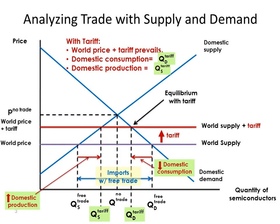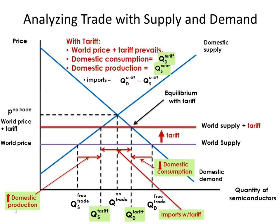What about imports? Imports are the difference between quantity demanded and quantity supplied. QD with the tariff is here and QS with the tariff is here, so imports are the difference — this distance right here. Notice that imports have fallen. Finally, a tariff is a tax on imports, so it generates revenue. The tariff revenue going to the government equals the tariff amount times the quantity of imports with the tariff.